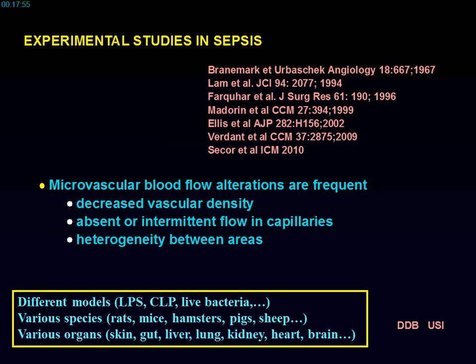How do you improve circulation of red blood cells and other circulation within the organs? The specificities of microvascular alterations and the dissociation between microcirculation and macrocirculation make microcirculation an important target for resuscitation.